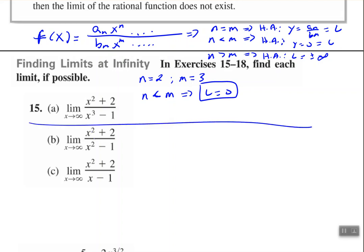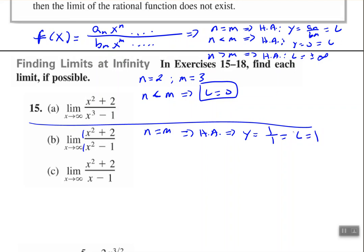For part b, the degrees are the same — n equals m. If the degrees are equal to each other, then your limit, just like your horizontal asymptote, is the ratio of the leading coefficients. In this case, it's 1 over 1. So your limit is the same thing as finding your horizontal asymptote — y equals 1 over 1. Therefore, my limit equals 1.